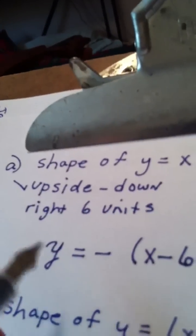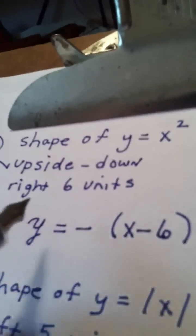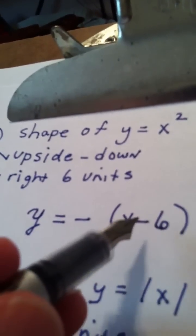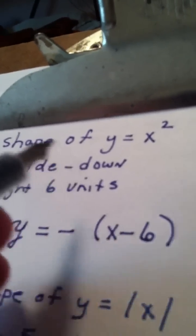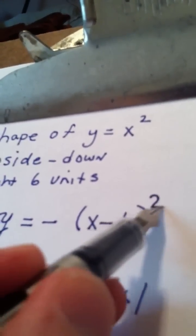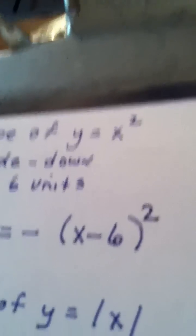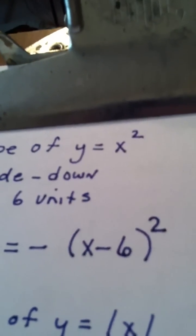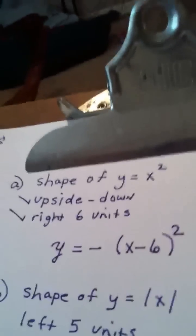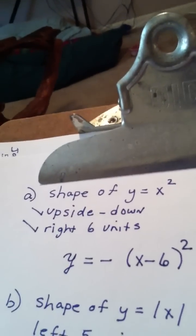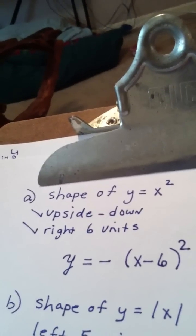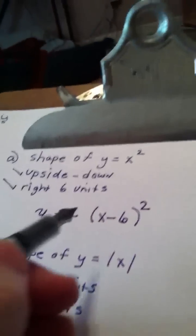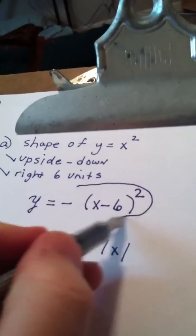So the upside down is taken care of with the minus. Right six units is taken care of by putting x minus six in parens, and the shape of x squared means that we have to put a squared outside the parens so that we know that this graph is a parabola that's being moved this way. So there's my final answer, y equals the opposite of, and then quantity, x minus six squared. That's my answer to that first problem.